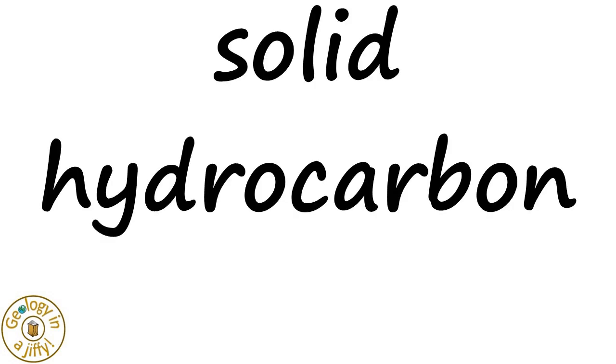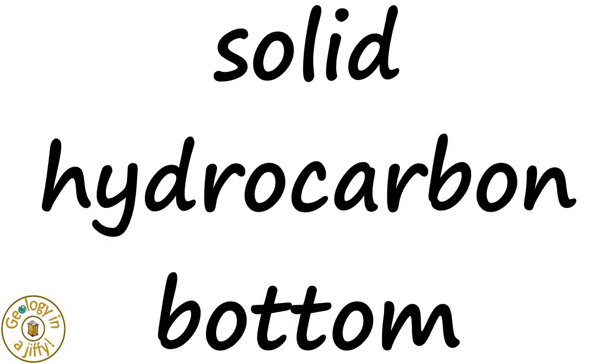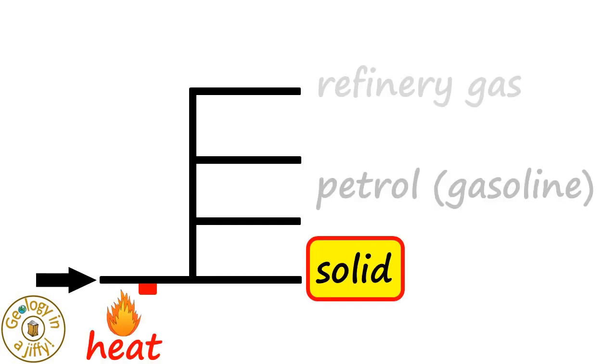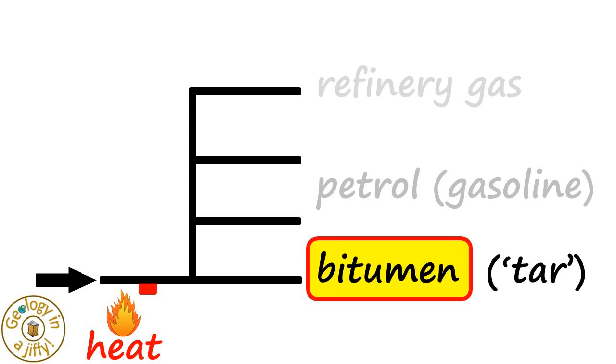The solid hydrocarbon is found at the bottom of the tower. At the bottom, which sounds like bitumen. The solid residue left when separating crude oil. So here, at the base of Jiffy, the solid fraction is called bitumen and is also known as tar.